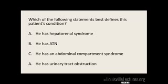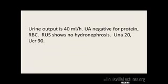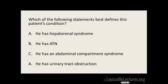ATN. So you think he has abdominal compartment syndrome? Always go with your first instinct — he does have ATN. He had a CT with contrast, and he had tense ascites where he got paracentesis. He can't have abdominal compartment syndrome because they got rid of the ascites. Hepatorenal is a diagnosis of exclusion, so you have to rule out everything else. It's not urinary tract obstruction because imaging showed no hydronephrosis. This person has ATN, not hepatorenal syndrome.